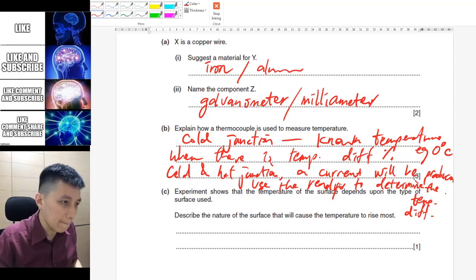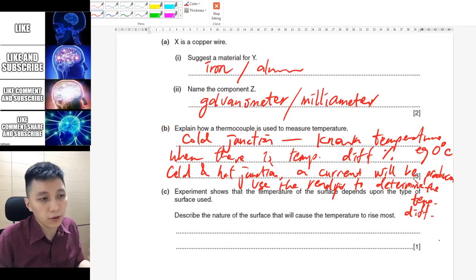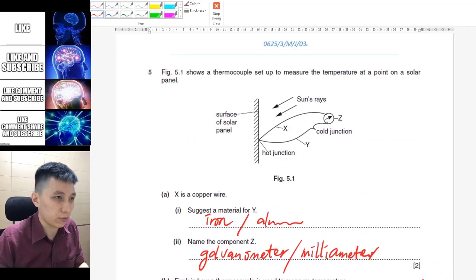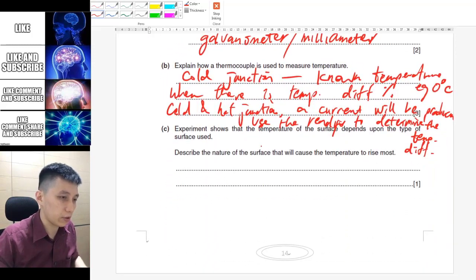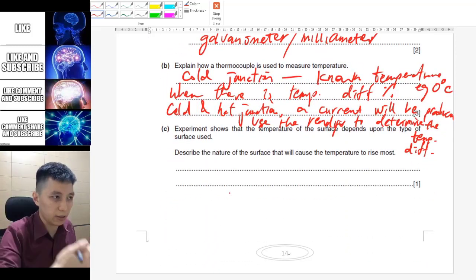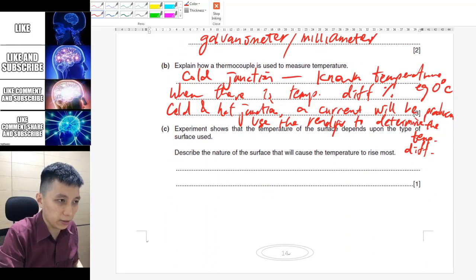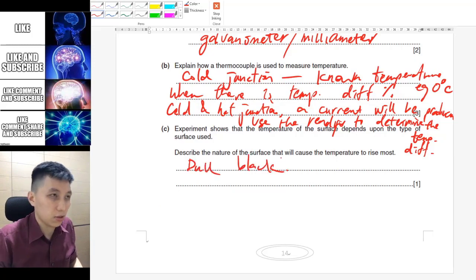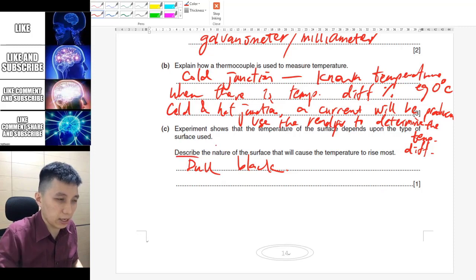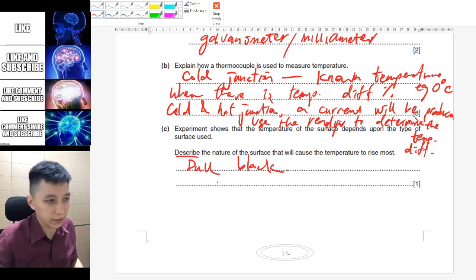Part C is something related to the heat transfer method earlier. It asks you what sort of surface would cause the temperature rise to be most for this solar panel. So if you recall, when it absorbs the solar energy, then apparently you want to use dull black, because it's a good absorber of radiation. Here you don't have to explain, because it's just one mark, and also notice that the command word is called describe the nature only. So you can just say the color is dull black.